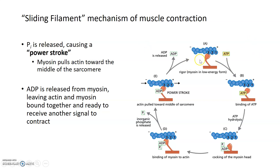One more time: a signal to contract is received, and at this point myosin and actin are still bound together. But in order for contraction to occur, myosin has to unbind from actin, which it does upon binding to ATP. ATP-bound myosin heads cock back and get into the ready position. Then the myosin heads hydrolyze ATP into ADP and inorganic phosphate, allowing the myosin head to bind to actin in its cocked back ready position. Inorganic phosphate is released, pulling the actin filament towards the center of the sarcomere. ADP is released and the whole cycle can start again.